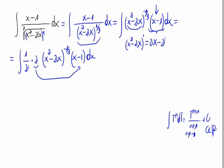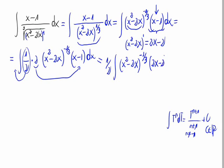Let's multiply it so we have the derivative of the power. We can take the 1 half out of the integral, so this would be equal to 1 half times the integral of x squared minus 2x raised to minus 1 third, times 2x minus 2. Applying the formula, because we have a power and the derivative of the base of that power.